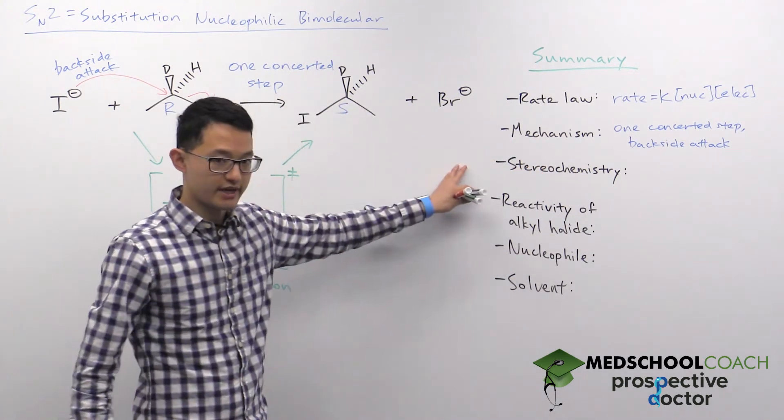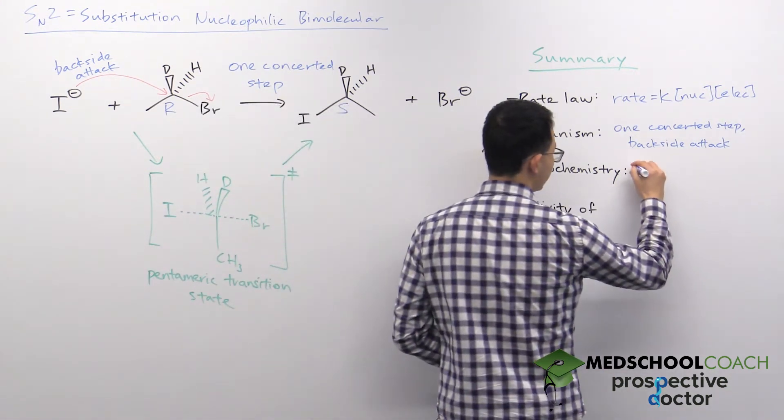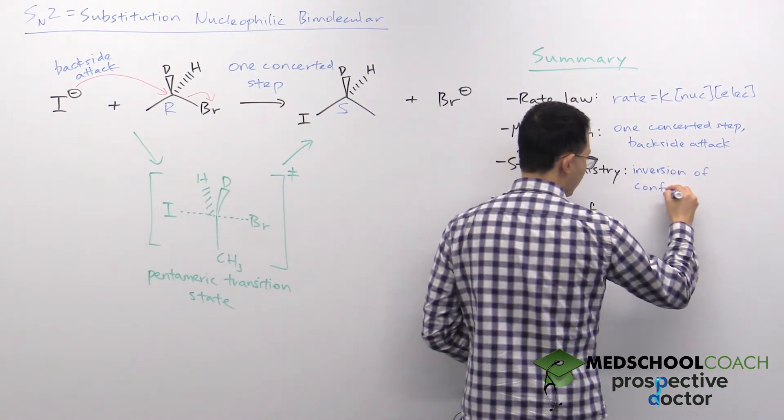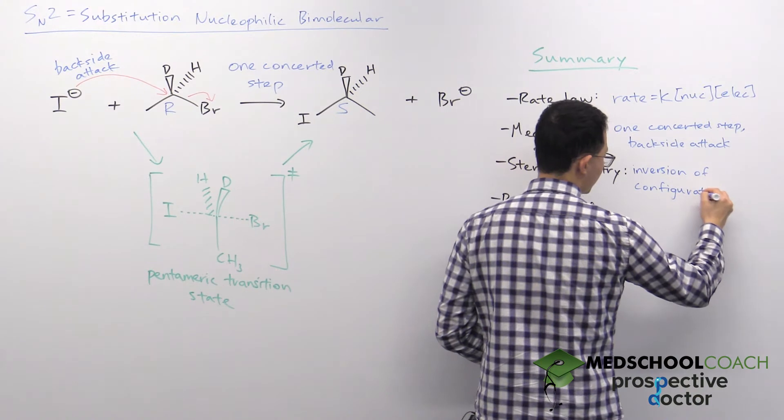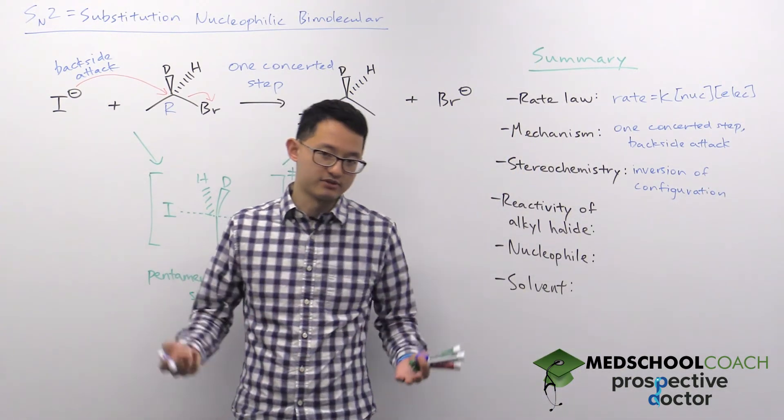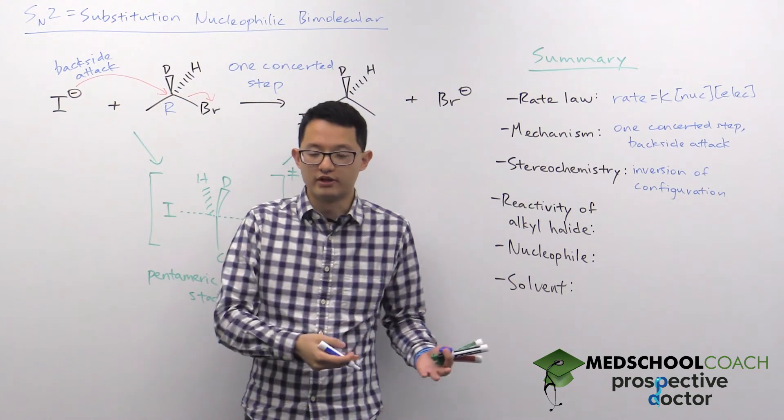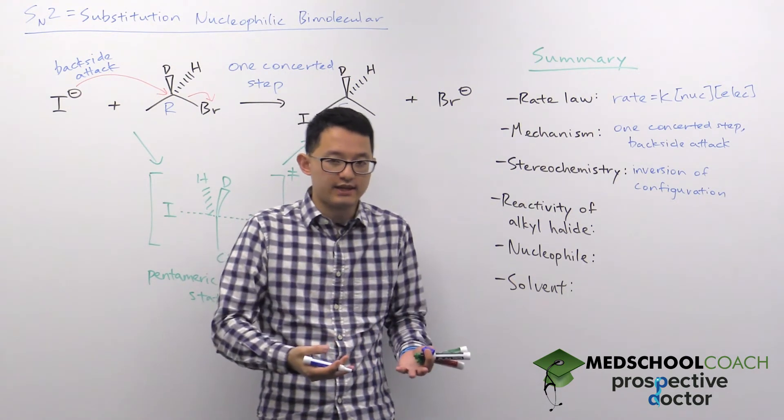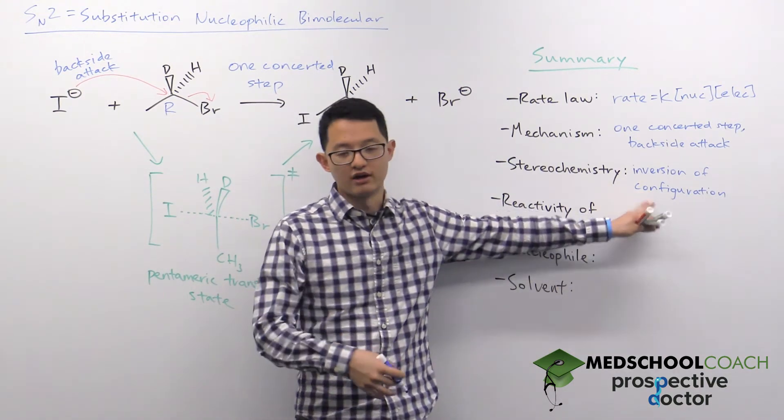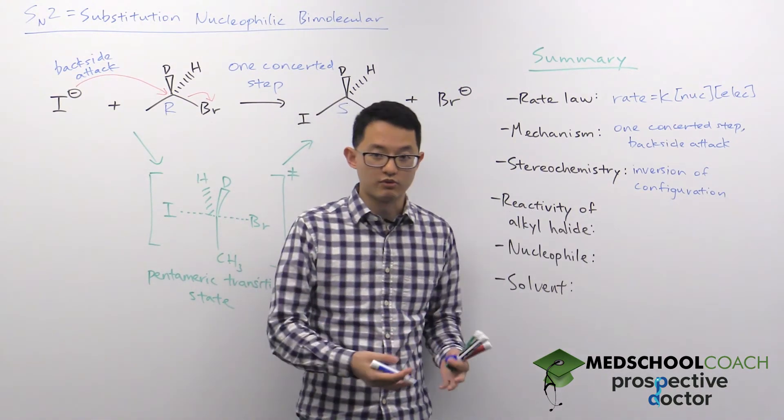Now, with the stereochemistry, we said that you have inversion of configuration. This applies, of course, only if your starting molecule is chiral. If your molecule isn't chiral and doesn't have absolute configuration, then it doesn't matter what your product is going to be. It's not going to be chiral either. But if you start with S, your product will be R. If you start with R, your product will be S.